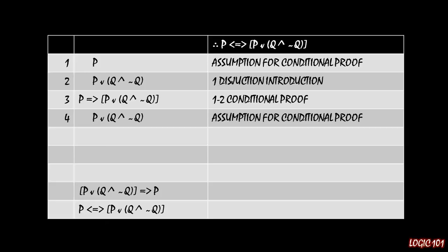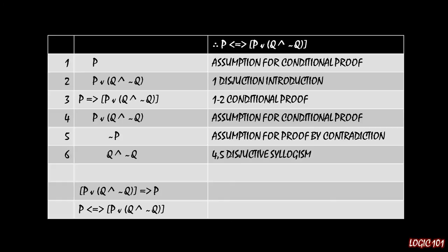And if we know that the second half of the disjunction can't be right, it seems like we have a good candidate for a proof by contradiction. So let's assume for the moment that not p is true. If not p is true, then we know in theory that the second half of the disjunction must be true. If not p is true, then through disjunctive syllogism, the second half of line four must be true, which is q and not q.